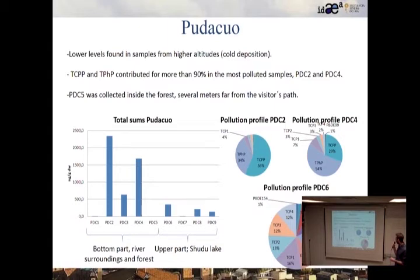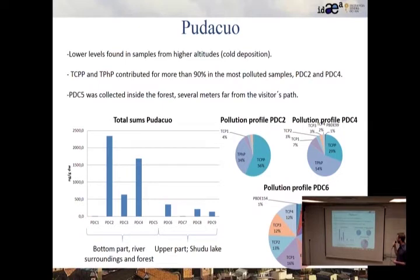In the two most-polluted bottom samples, OPFRs are much higher than PBDEs, and the two dominant compounds in both cases are TCPP (a chlorinated OPFR) and TPHP (with three phenyl side chains). In the top part of the park near the lake, where levels are much lower, the pollution profile is more varied. OPFRs are still present, but the dominance of TPHP or TCPP is not as pronounced.